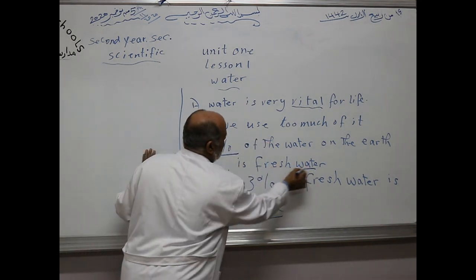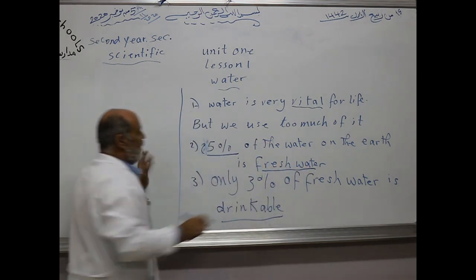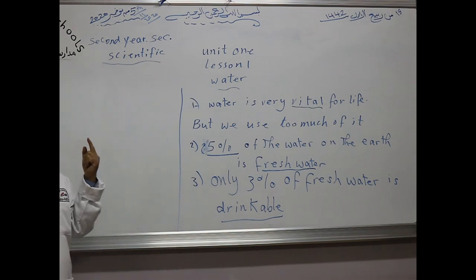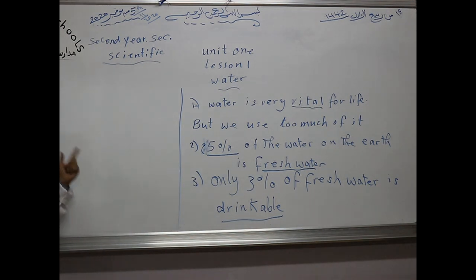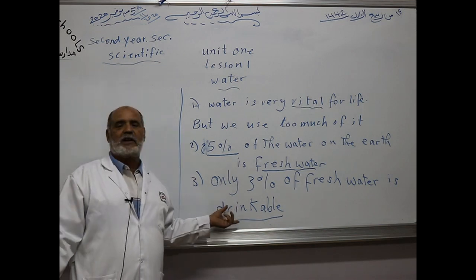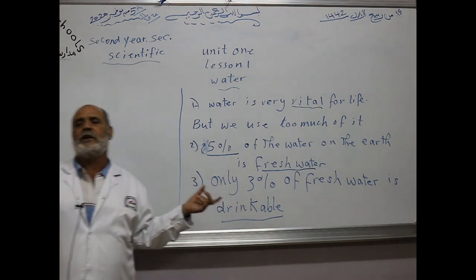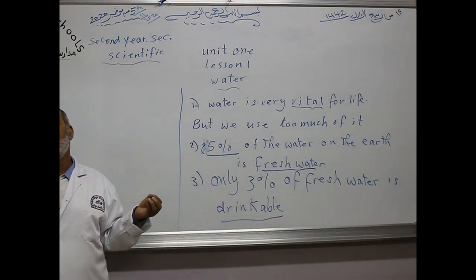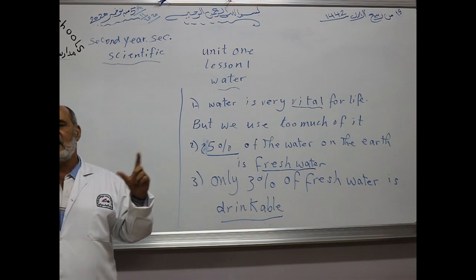25% of water on the earth is fresh water. Only 3% of it is drinkable. What is the meaning of drinkable? It means we can drink it.